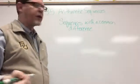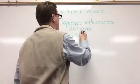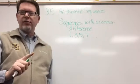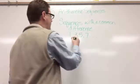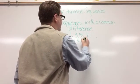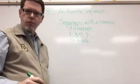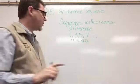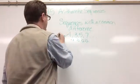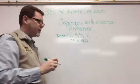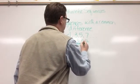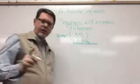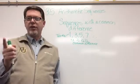For example, an arithmetic sequence might be 1, 3, 5, 7, dot dot dot — and the dot dot dot means it continues on forever. The common difference between these is plus two. Each one of these numbers in the sequence is called a term of the sequence, and this is our common difference.